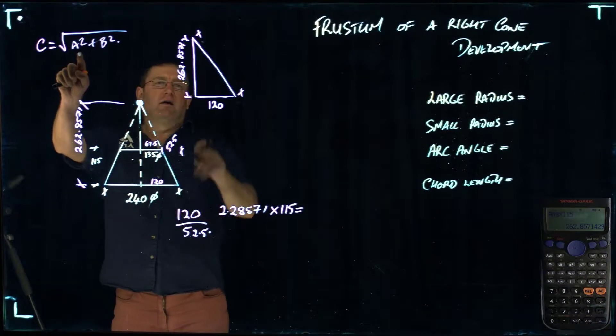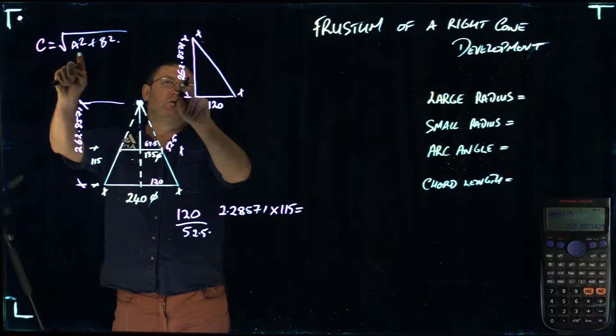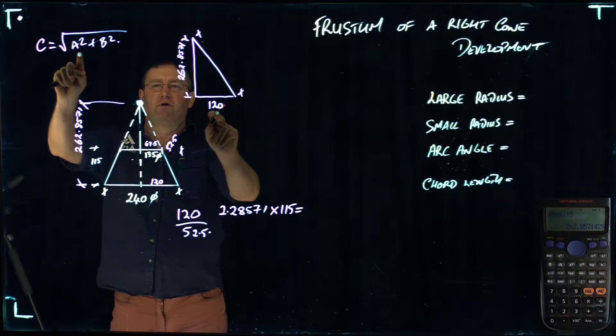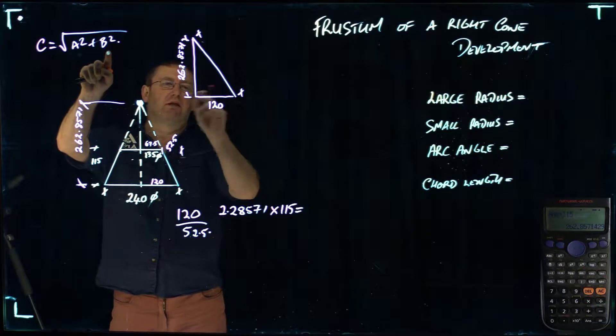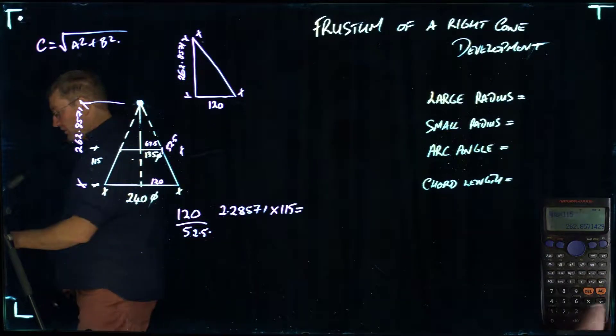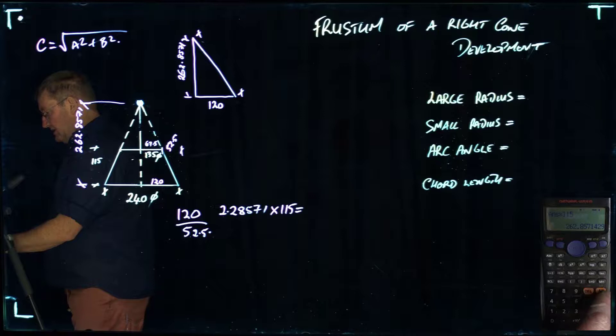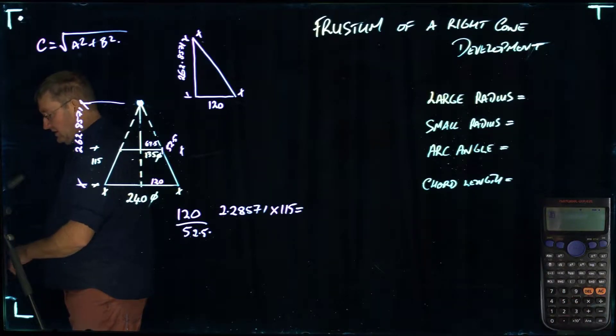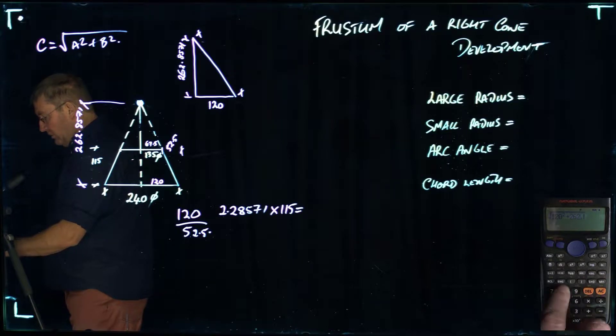A can be either the 262.8571 or it could be the 120. It doesn't matter which one you put it in. On the calculator to determine the hypotenuse, I'm going to push first the square root button. I'm going to push 120 squared plus 262.8571 squared.